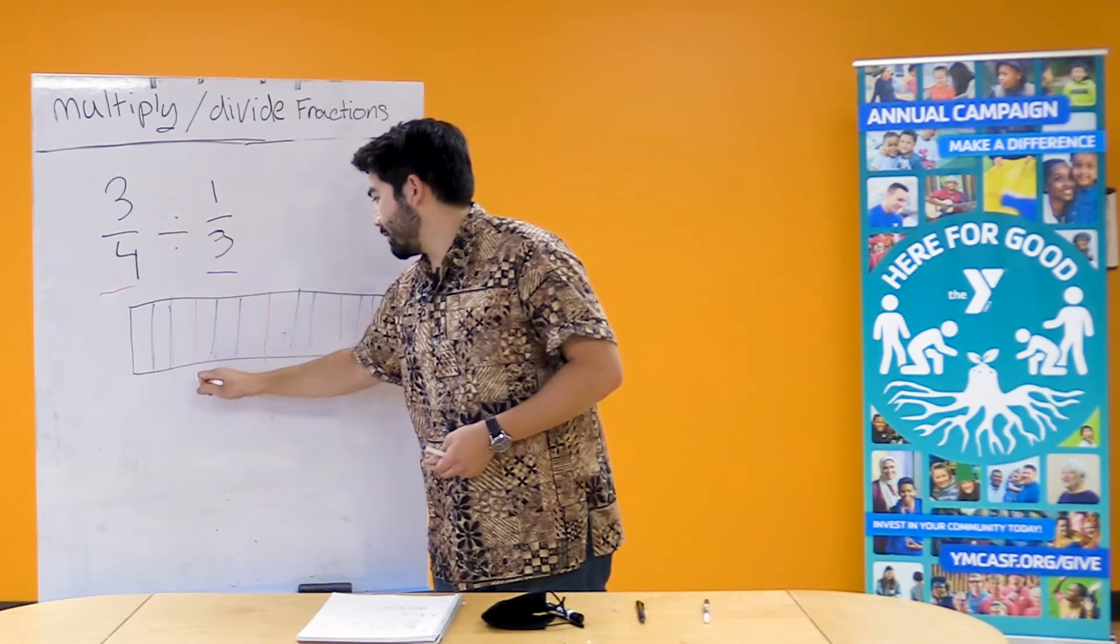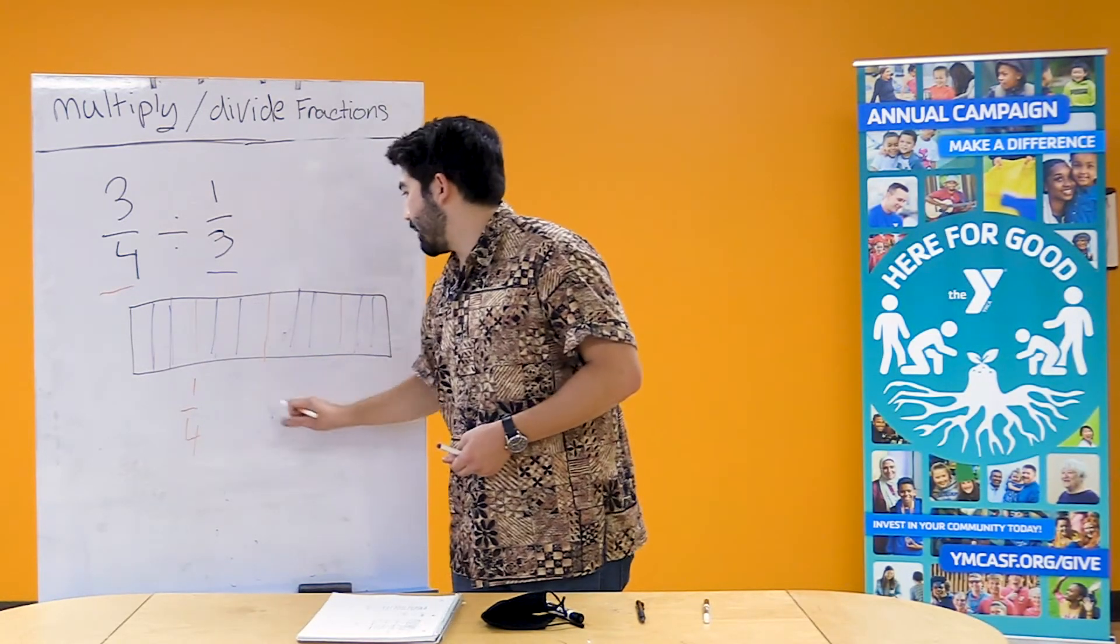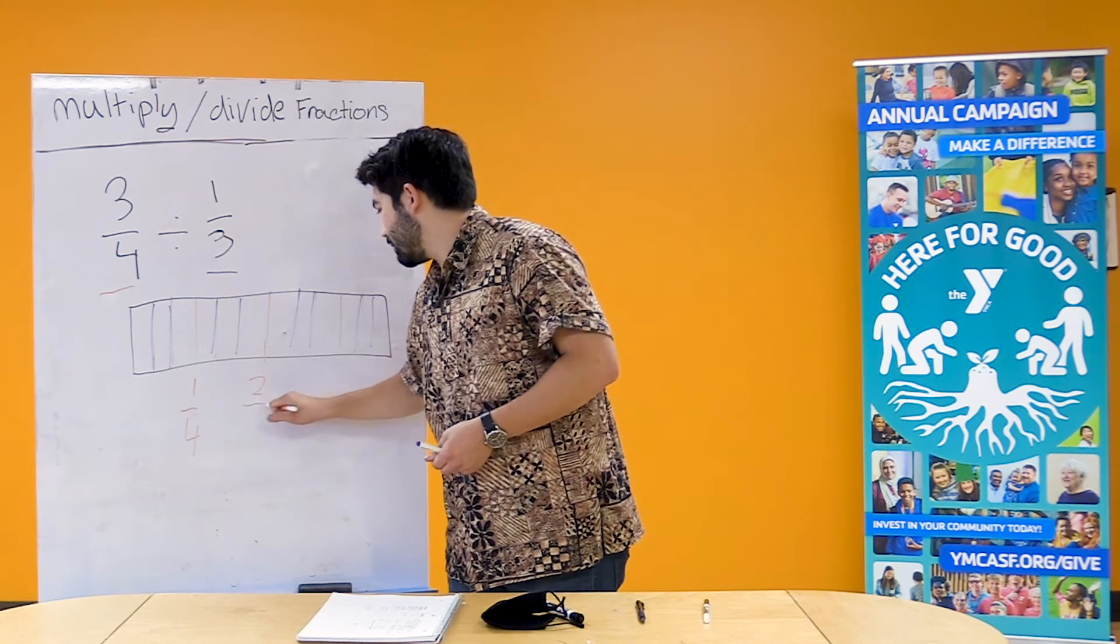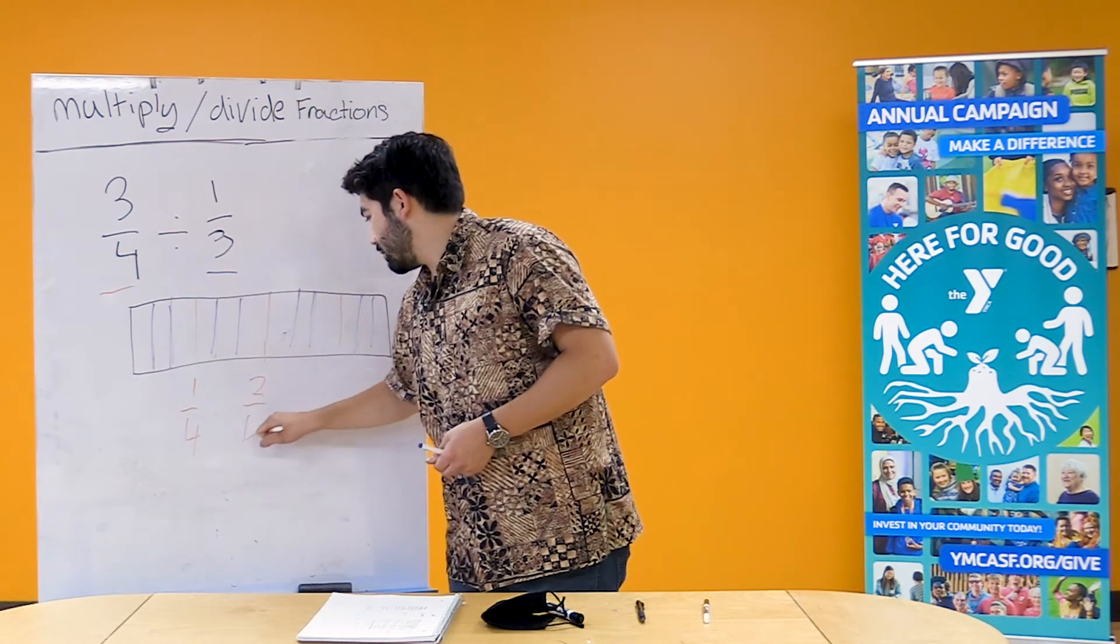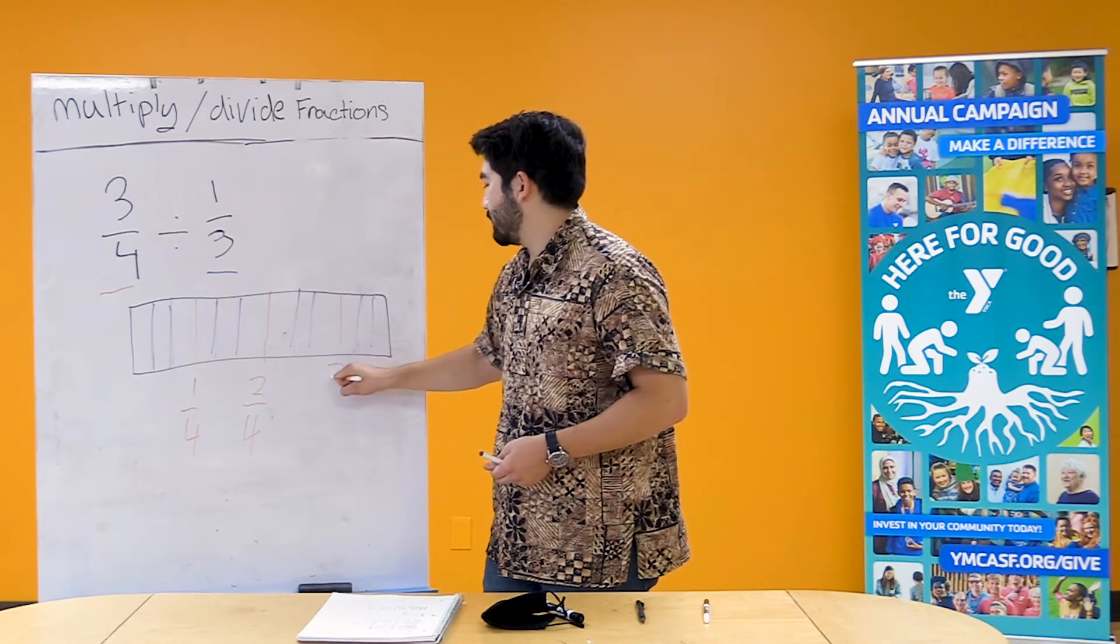So this line represents one fourth. This line represents two fourths. There we go. This line is gonna represent three fourths.